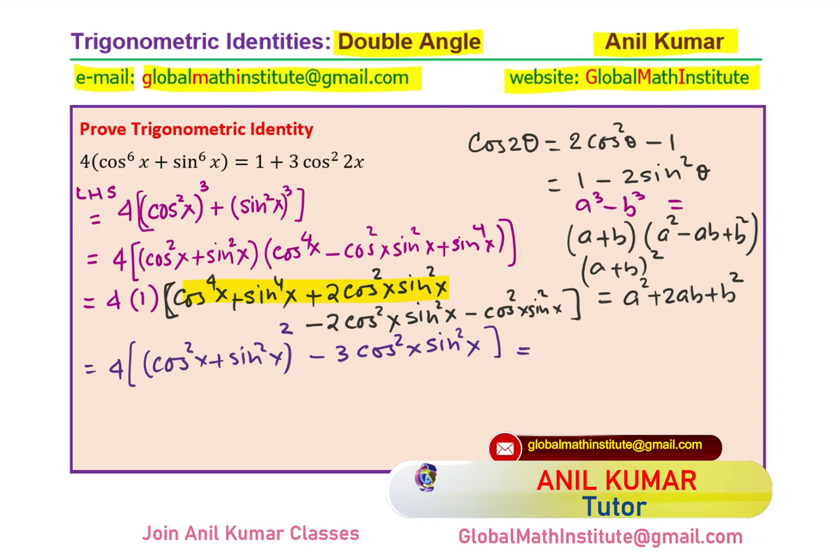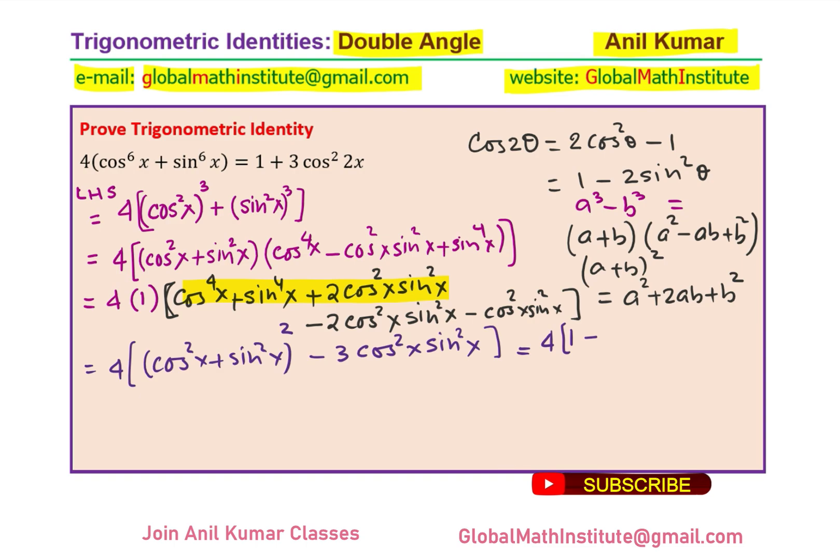Now cos square x plus sin square x is 1. So you get 1 square is 1. So we get 4 times 1 minus 3 cos square x sin square x. Let's open the bracket and then we can actually see how we could work with it. Does it remind you of anything? Sin 2x.